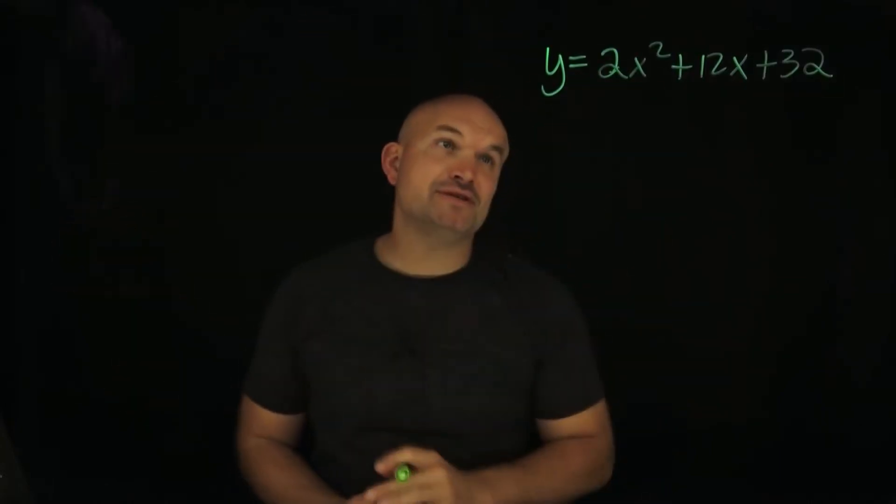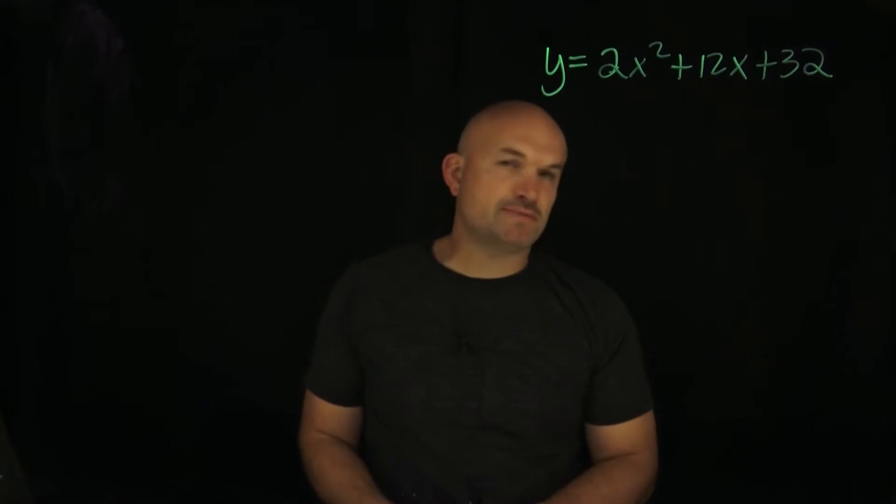What's up, guys? In this video, I want to show you how to complete the square step by step when we have a coefficient for x squared that is not equal to 1. In this case, you can see we have y equals 2x squared plus 12x plus 32.